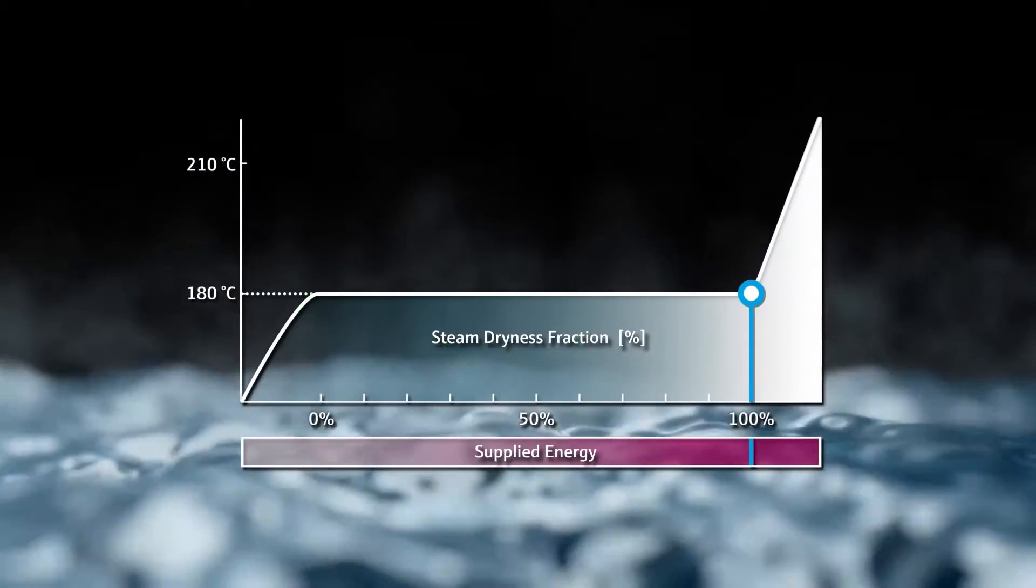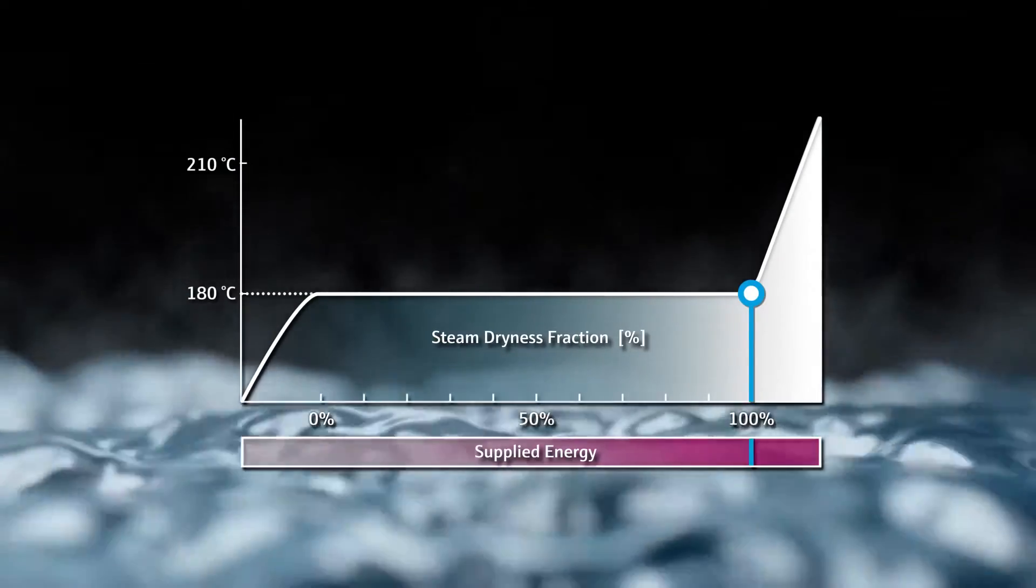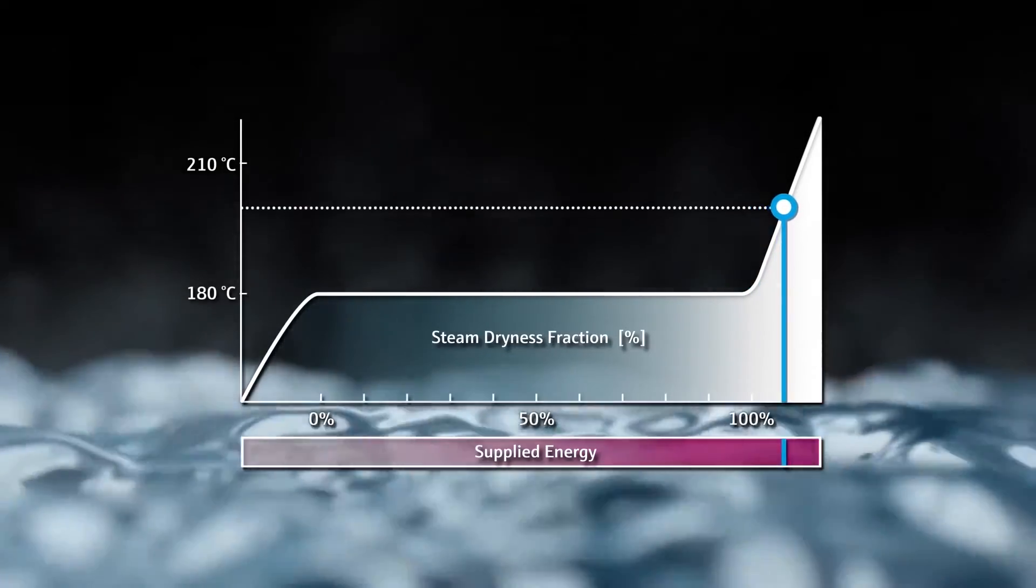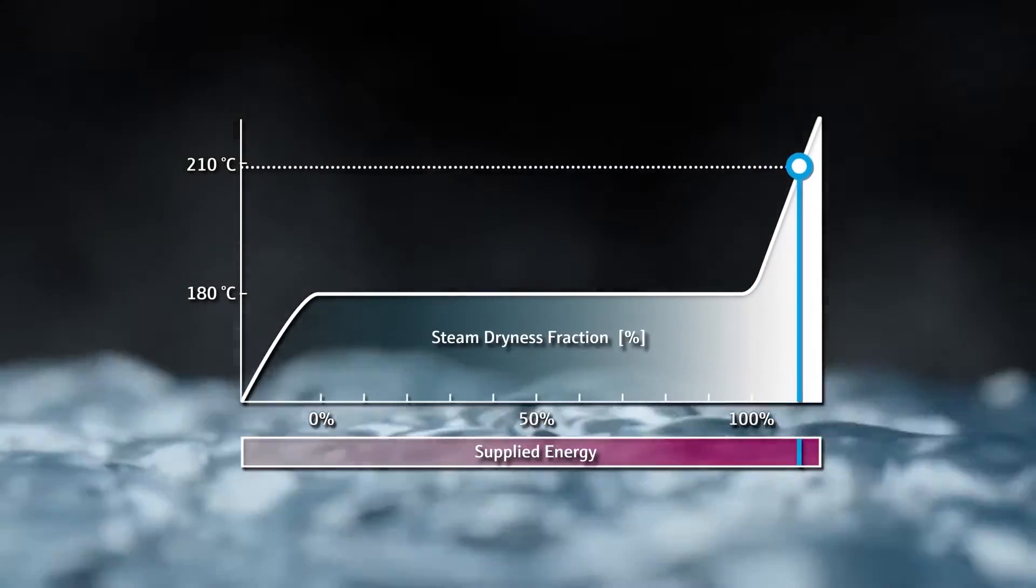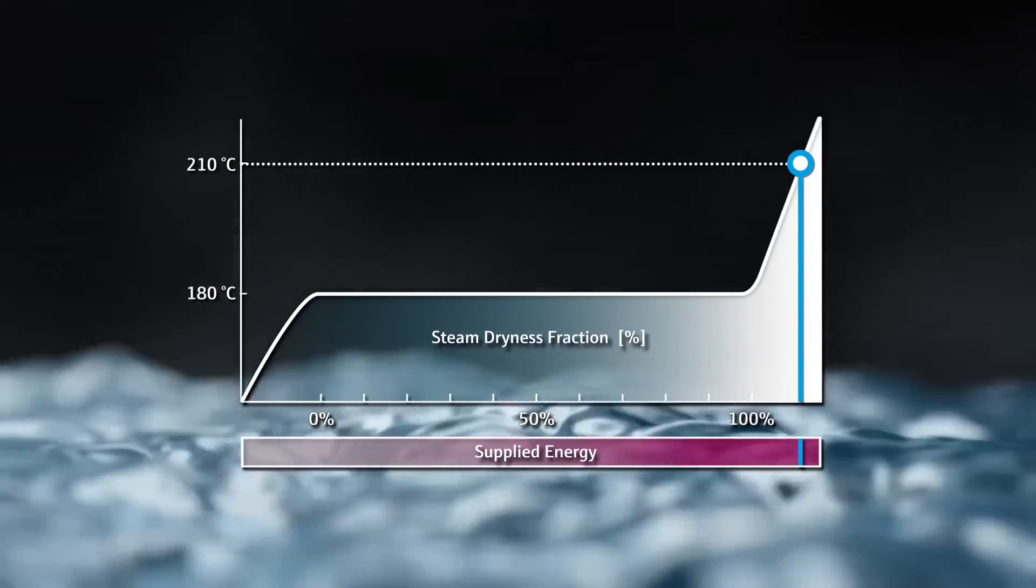This also applies to the so-called superheated steam. Superheated steam occurs when saturated steam is steadily heated further. Since saturated steam is already gaseous and no longer has a liquid phase, this only increases its temperature.